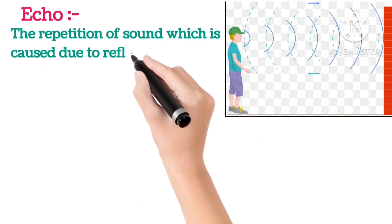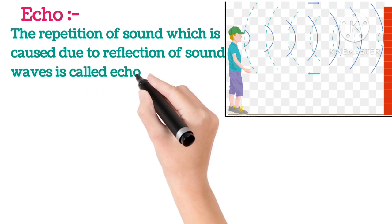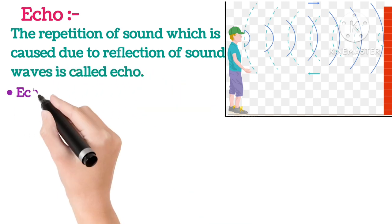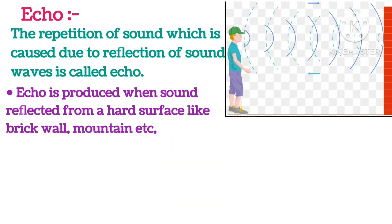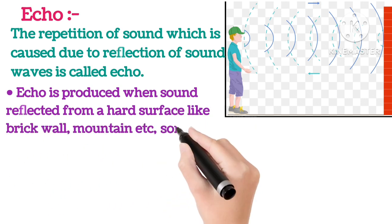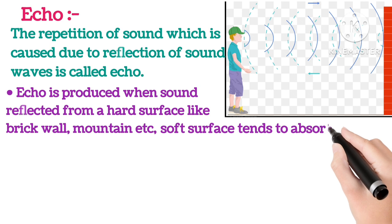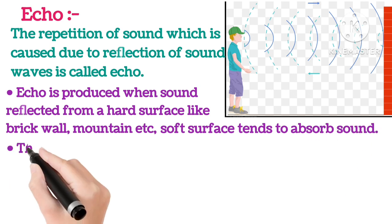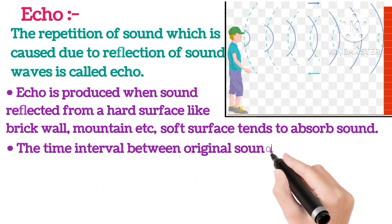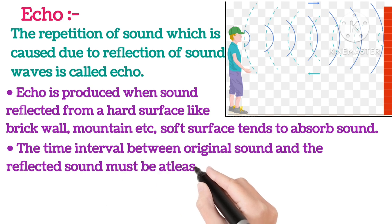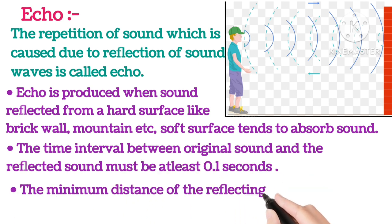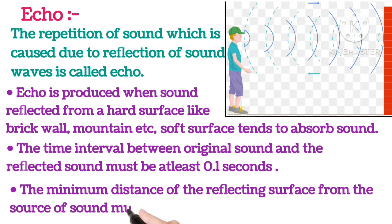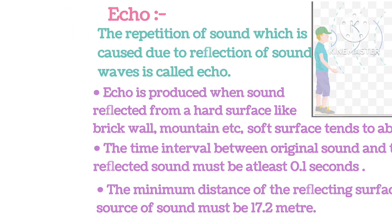Echo: The repetition of sound caused due to the reflection of sound waves is called an echo. Echo is produced when sound reflects from a hard surface like a brick wall or mountain. Soft surfaces tend to absorb sound. The time interval between the original sound and the reflected sound must be at least 0.1 seconds, and the minimum distance of the reflecting surface from the source of sound must be 17.2 meters.